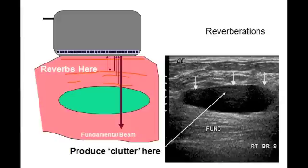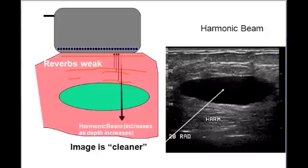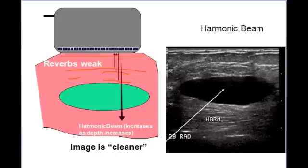Without harmonic imaging, the reverberations produce clutter in the image as demonstrated. With harmonic imaging, the reverb is weaker and the harmonic beam increases as the depth increases. As you can see, the image shown using harmonics appears cleaner without the reverb. Harmonics can be useful with technically challenging patients to clean up your images.